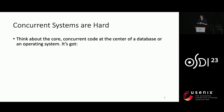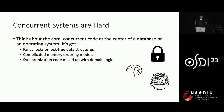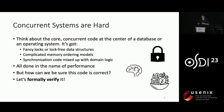Concurrent systems are hard because of all the complexities they've got — fancy locks, fancy lock-free data structures, complicated memory ordering that you have to deal with, or even synchronization code mixed up with domain logic. The reason we have to deal with all these things is, of course, in the name of performance. But it also means it's hard to be sure that the code is correct. And that's why we'd like to formally verify it.